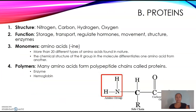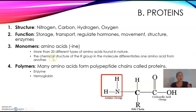The next macromolecule is protein. Again, organized by structure, function, monomer, and polymer. The structure obviously has carbon, hydrogen, and oxygen, but also has nitrogen. The functions include storage, transport, regulating hormones, movement, structure, and enzymes are made out of protein as well. So these are all different functions for proteins — they are things in your body that help it function.